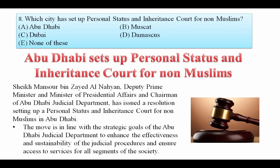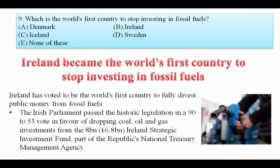Which city has set up a personal status and inheritance code for non-Muslims? Abu Dhabi set up a personal status and inheritance code for non-Muslims. Your answer is Abu Dhabi. Which is the world's first country to stop investing in fossil fuels? Ireland became the world's first country to stop investing in fossil fuels. Your answer is Ireland. The capital of Ireland is Dublin.